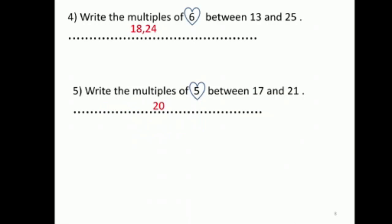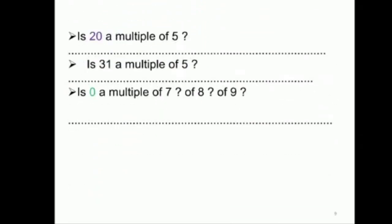أكزامبل: إذا أنا سألتك، هل الـ twenty هي multiple للـ five؟ كيف بتعرف إذا هي multiple أو لا؟ فيك تعد بالـ five لتوصل للـ twenty، إذا وصلت بقوم مزبوط. أو فينا نعرف من خلال الـ multiplication، لأنو الـ 5 times 4 هي 20، معناتها هي multiple للـ five.